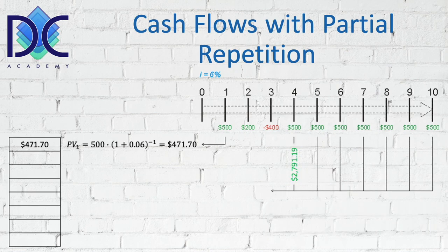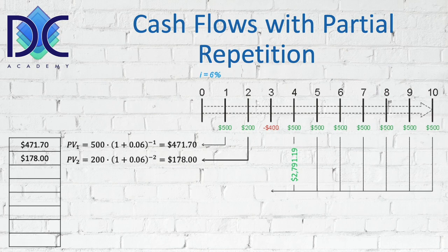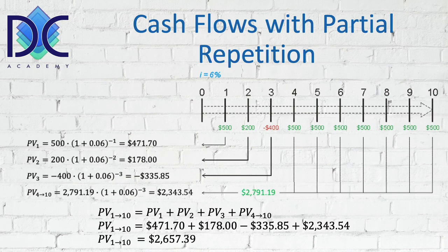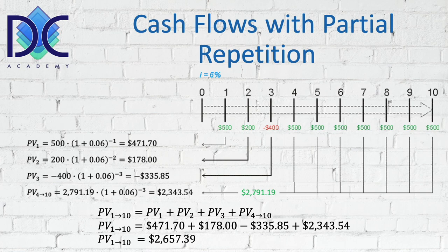Using the six percent rate, we discount period one: the amount 500 divided by 1.06 gives us 471.70. The second period is the same approach. For the third period we have a negative value — we divide 400 by 1.06 to the third power, which gives us minus 335.85. We also discount the annuity value at end of period three — the 2,791 — by dividing by 1.06 to the third power. When we add all of these together we find a total present value of 2,657 dollars and 39 cents.